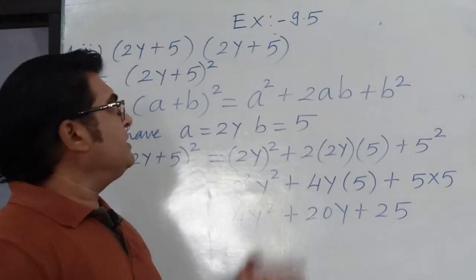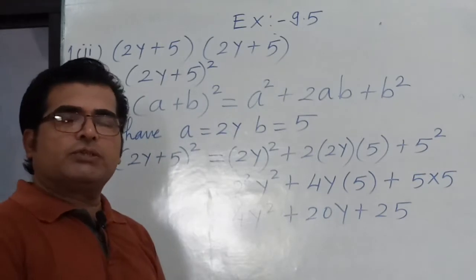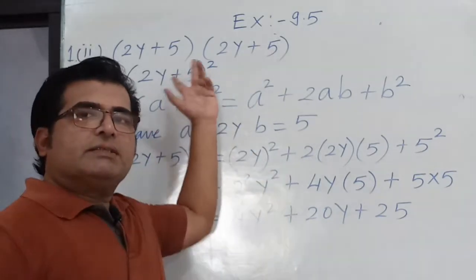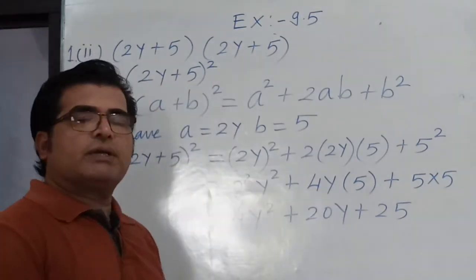First we convert 2y plus 5 into 2y plus 5 the whole square, because the same numbers are given two times. So we will write 2y plus 5 the whole square.